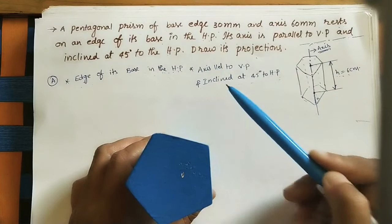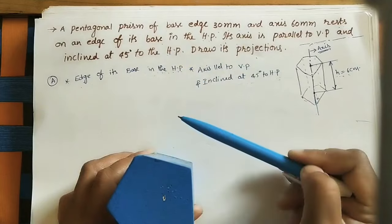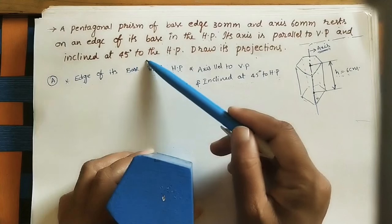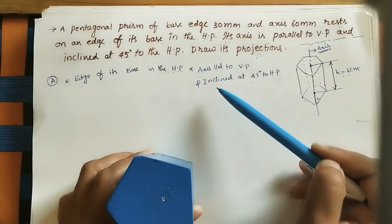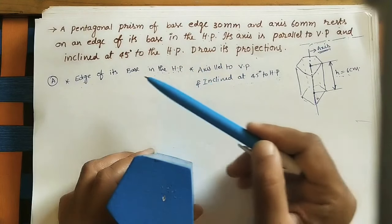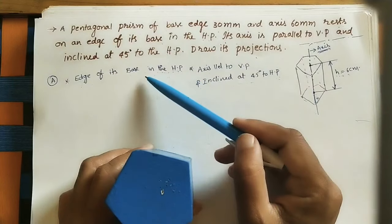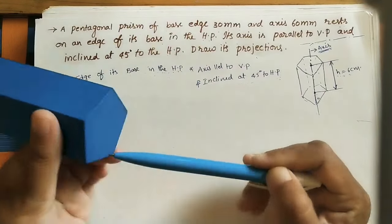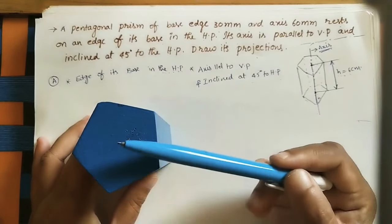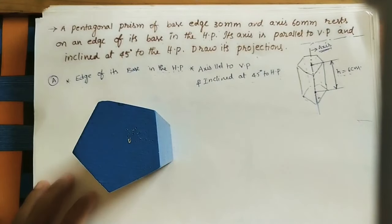Before doing the projections, take the given conditions. First condition: an edge of the base is in the HP. Second condition: axis is parallel to VP and inclined at 45 degrees to HP. Instead of taking all conditions at once, take the first condition — one edge of the base is in the HP. Assume all five edges of the base are on the HP.